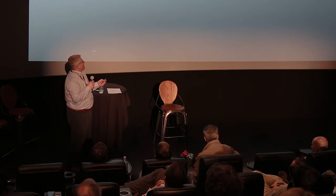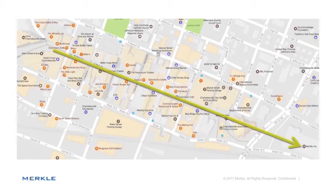So we've got some good cross section here. For those not familiar with Merkle, we're part of a global conglomerate, but our coolest and best looking office is seven blocks from here up the road. We're building a data science team here because we really believe in this community, and this community is going to grow to be one of the better data science communities in the country.